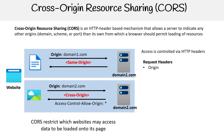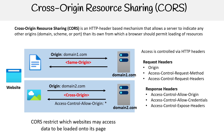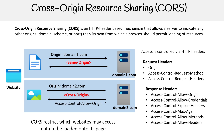we have the request headers of origin, access-control-request-method, and access-control-request-headers. For response headers, we're going to get back things like access-control-allow-origin, access-control-allow-credentials, access-control-expose-headers, access-control-max-age, access-control-allow-methods, and access-control-allow-headers.